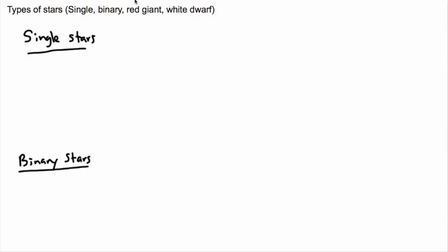There are lots of different types of stars, and this list I'm going to show you is hardly exhaustive — there are tons more. We're going to talk about single stars, binary stars, and three different types of those, as well as red giants and white dwarfs. There are also things like neutron stars, pulsars, Cepheid variables, and RR Lyrae stars — tons of different types.